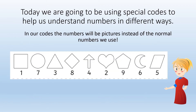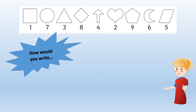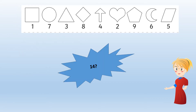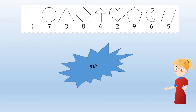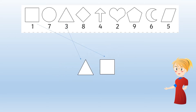Today we are going to be using special codes to help us understand numbers in different ways. In our codes today the numbers will be pictures instead of the normal numbers that we use. Here is the code that we're going to use. If you use this code, how would you write the number 14? You need a square and then an arrow. How about the number 31? A triangle and then a square.